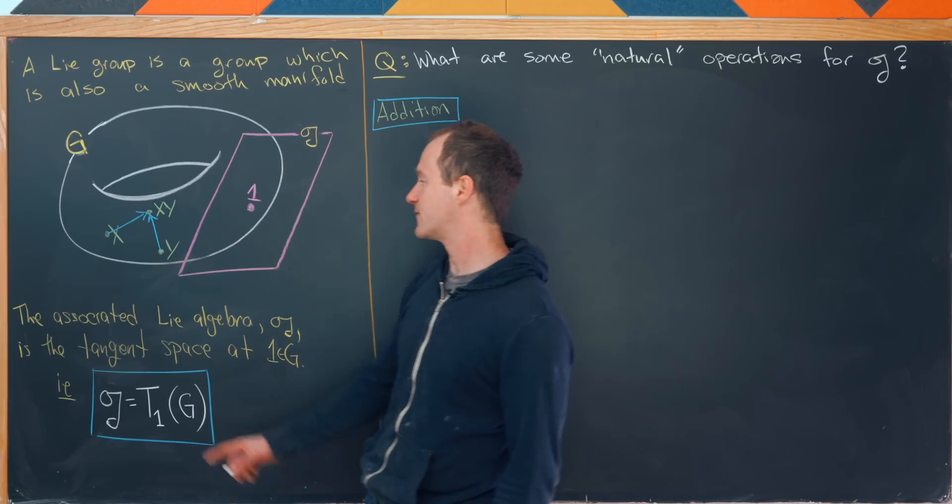Since this is a smooth surface, we can construct a tangent space at any point on this surface. In this case it'll look like a plane, but more generally it's a tangent space that may have more than two dimensions. If we look at the tangent space at the identity, we get a super special object known as the Lie Algebra. The associated Lie Algebra, which is this fancy G, is the tangent space at the identity.